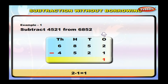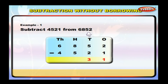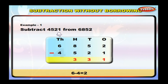Subtracting ones: two ones minus one one is equal to one. We write one under the ones column. Subtracting tens: five tens minus two tens is equal to three tens. We write three under the tens column. Subtracting hundreds: eight hundreds minus five hundreds is equal to three hundreds. We write three under the hundreds column. Subtracting thousands: six thousands minus four thousands is equal to two thousands. We write two under the thousands column.